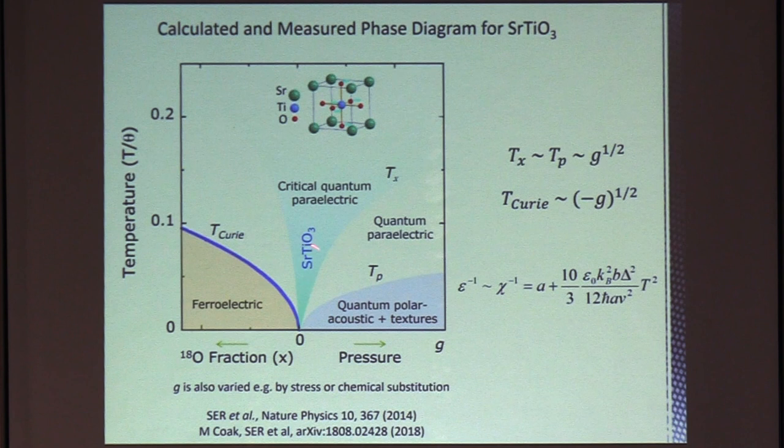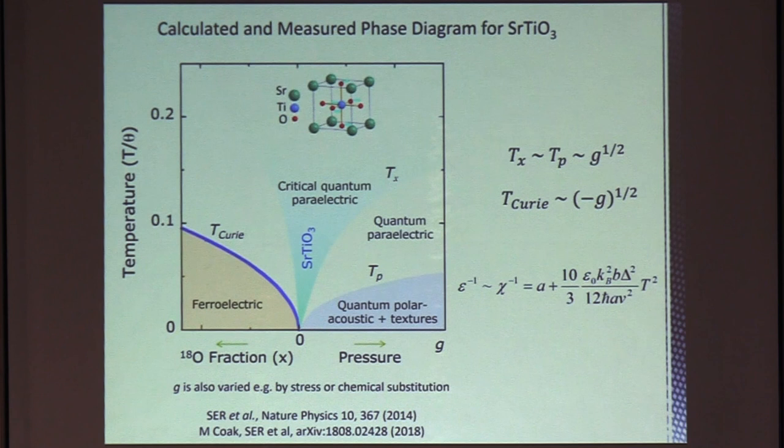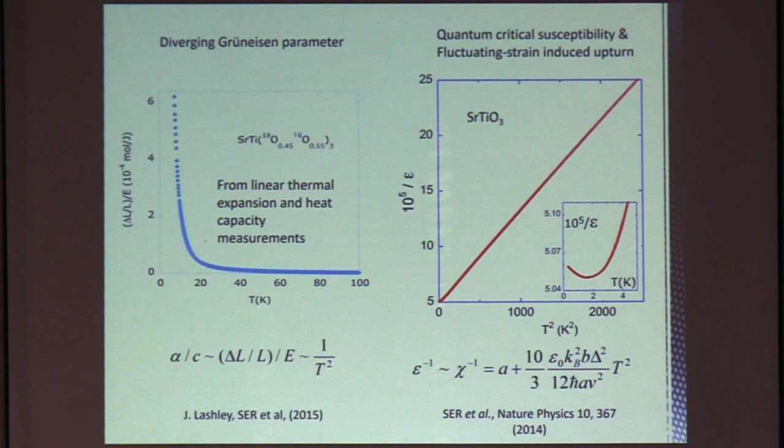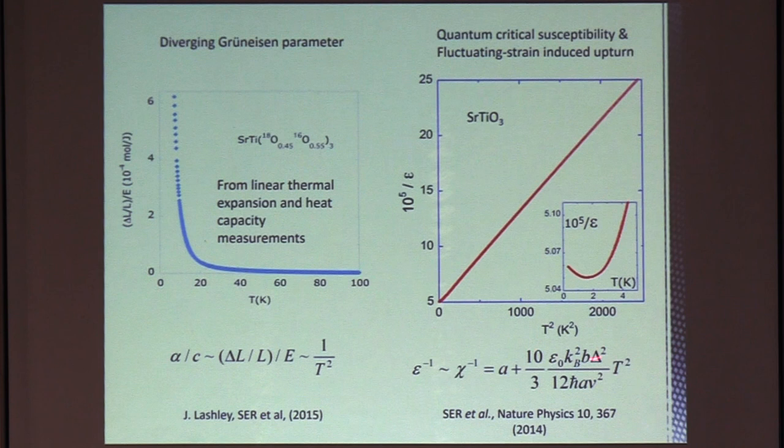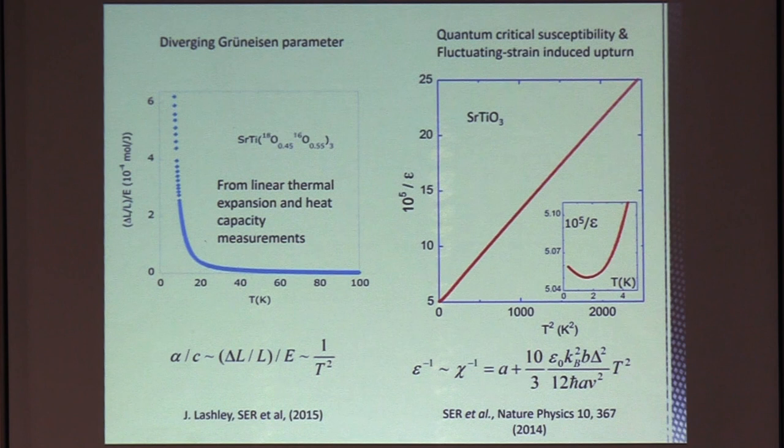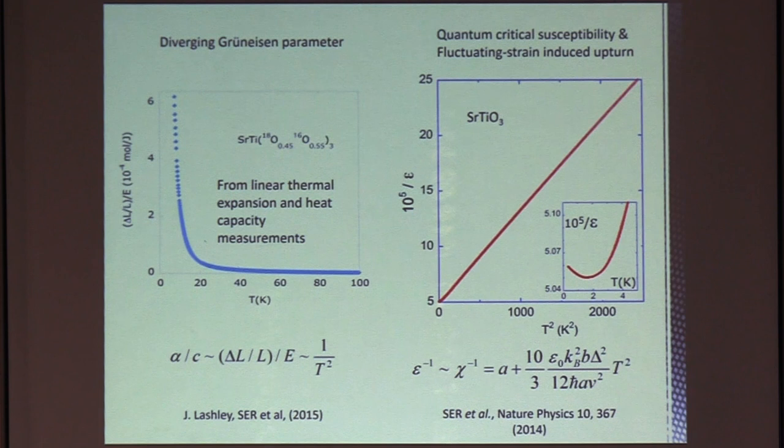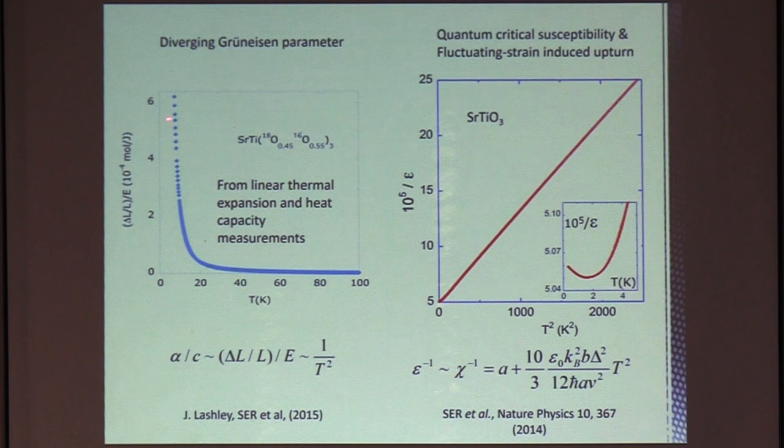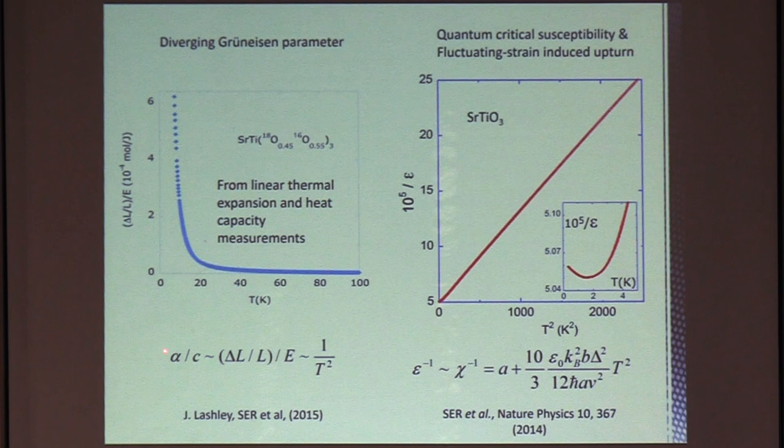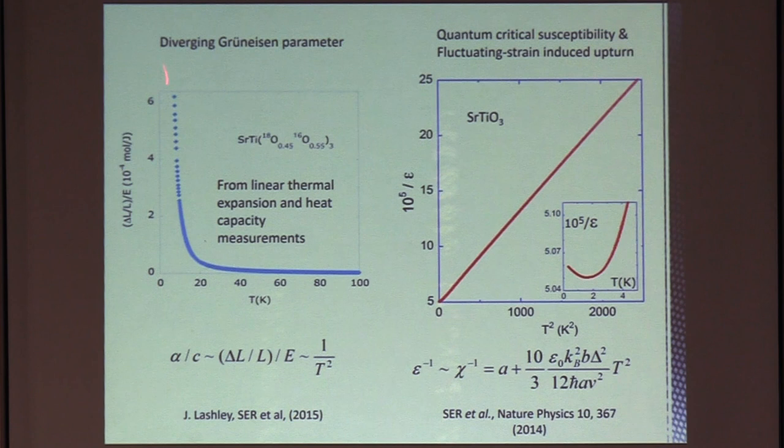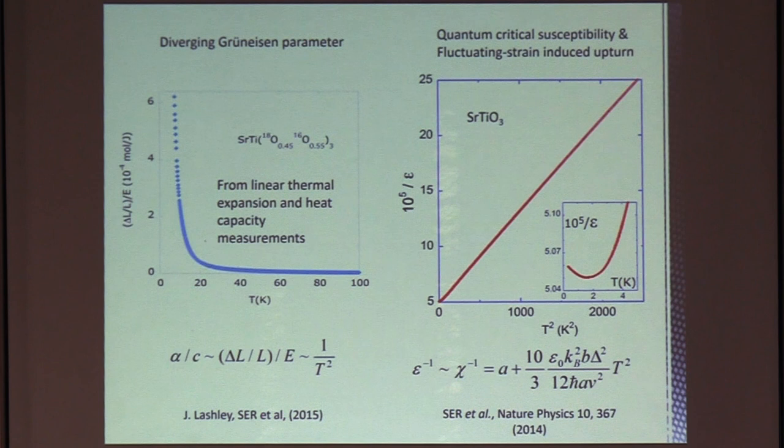But this is a measured phase diagram. And it's also calculated from a model without any adjustable parameters. So just to show you something like how the data looks, this is the inverse susceptibility measured, plotted against t squared from the measurement. And you can see a very nice straight line close to the quantum critical point here, which is very different from the classical Curie-Weiss result. This is the minimum in the inverse susceptibility. That's what I was telling you about before, the peak in the dielectric constant. And here we show that the Grüneisen ratio, which is the linear thermal expansion coefficient divided by the heat capacity, diverges as one over t squared, close to a ferroelectric quantum critical point, which is very different for other insulating materials away from criticality.